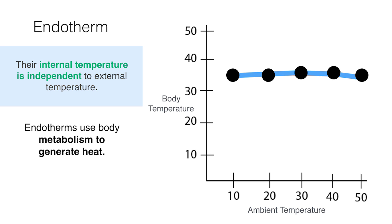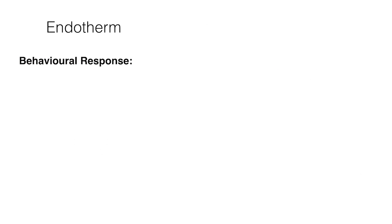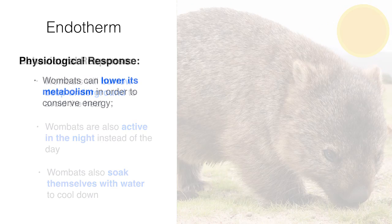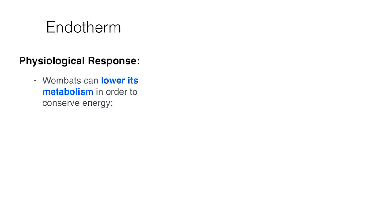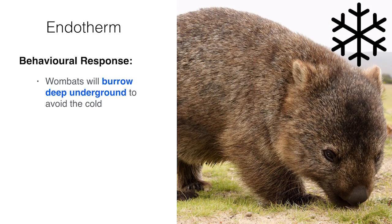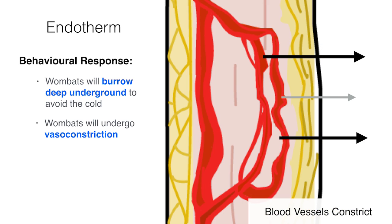So, what does this have to do with wombats? Well, in hot temperatures, wombats exhibit a behavioural response to the situation. They will burrow deep underground to avoid the heat, they are active at night instead of the day, and they will also soak themselves with water to cool down. Wombats also exhibit a number of physiological responses. They can lower their metabolism in order to conserve energy and control the amount of heat generation. They can also undergo vasodilation, which is when the blood vessels expand and heat is lost across the epidermis — essentially what causes people to go red during a hot day. In colder temperatures, wombats burrow deep underground to avoid the cold and undergo vasoconstriction, which is when the blood vessels constrict and there is little heat loss across the epidermis — meaning wombats can go pale on a cold day like humans, under all that fur.